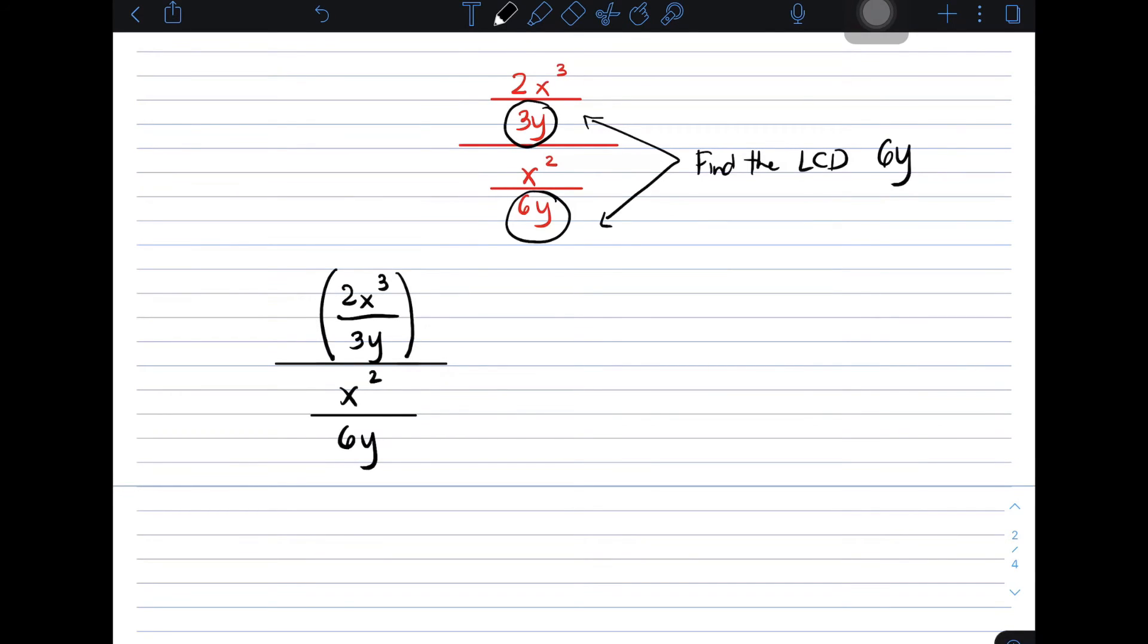Our numerator, we multiply by the LCD which is 6y. Same with your denominator. Our denominator, which is x squared over 6y, we multiply by the LCD which is 6y.